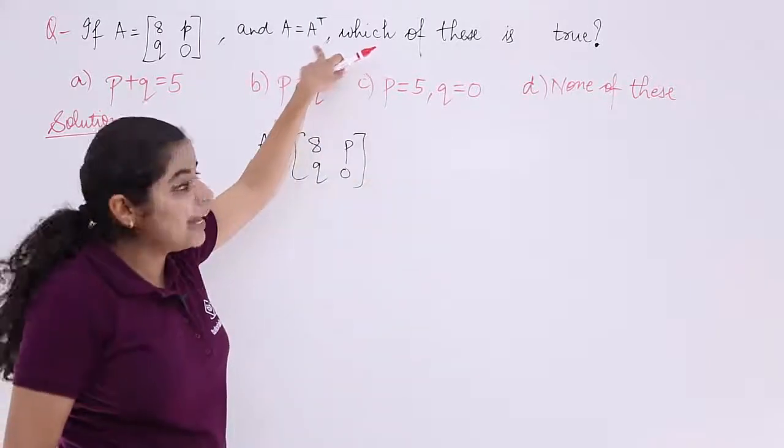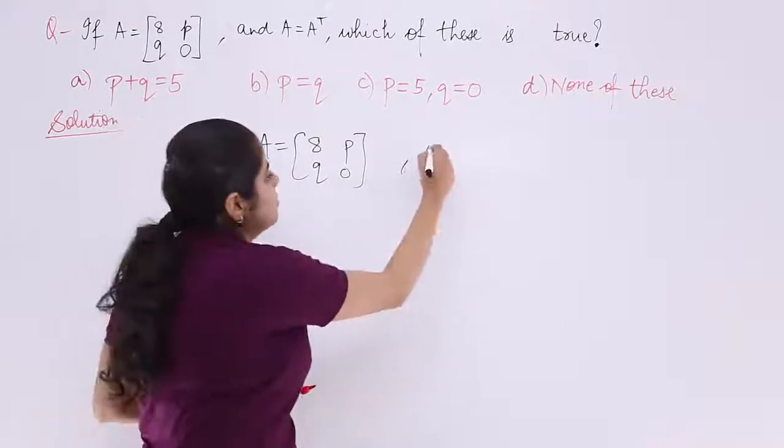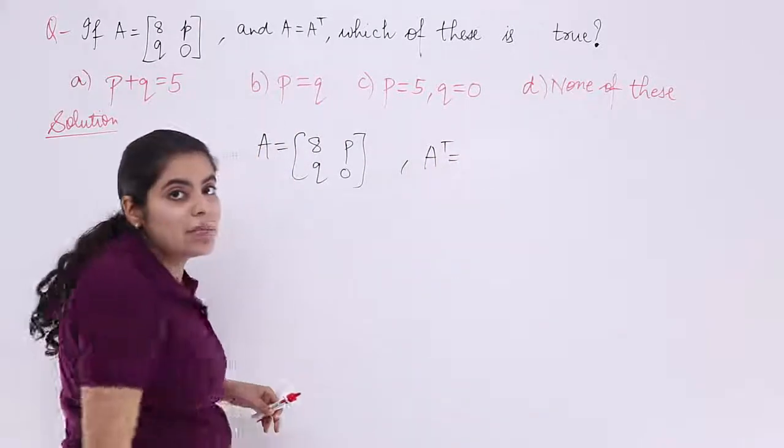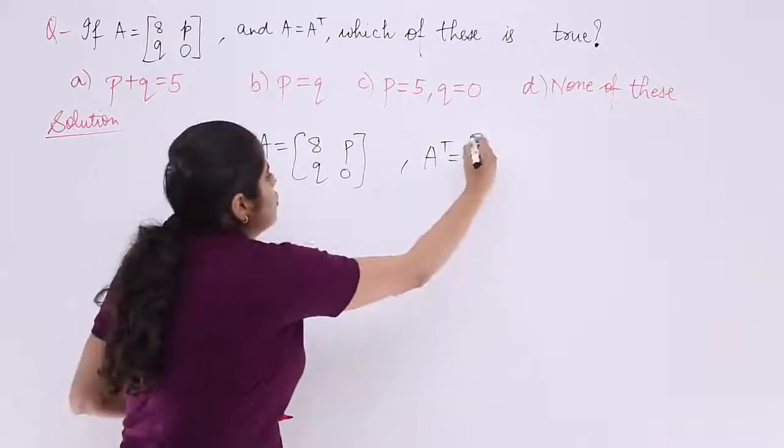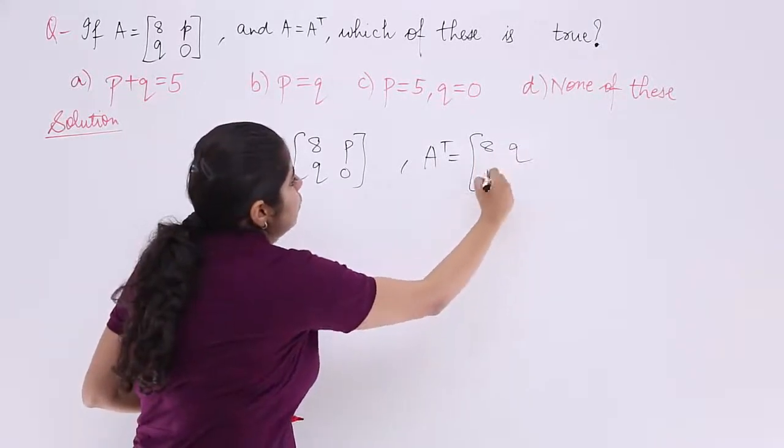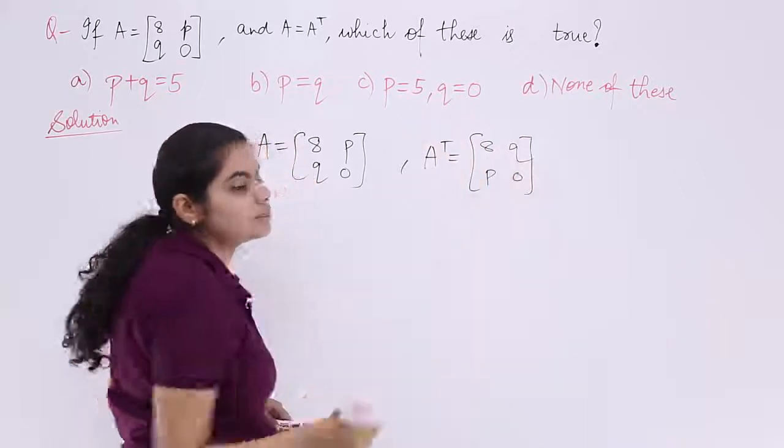What will be A transpose? A transpose basically will be another matrix wherein the rows will be interchanged with columns, the columns will be interchanged with rows, so it becomes 8, Q, P, 0, right.